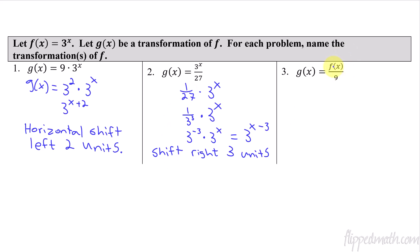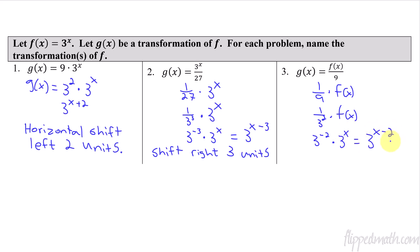Sometimes problems write it as f(x) instead of spelling out 3 to the x. So (1/9) times f(x) is the same as 1 over 3 squared times f(x), which is 3 to the negative 2 times 3 to the x. Adding the exponents gives 3 to the x minus 2. Therefore, dividing by 9 is shifting it right two units — that's your answer for this one.